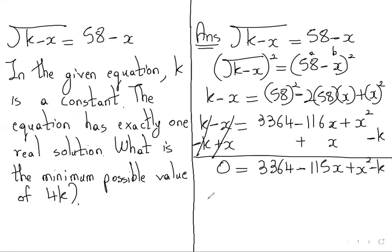So now we can write in proper order: first x square, then minus 115x, then plus 3364 minus k. Since k is a constant, it is just a number. So this 3364 minus k we will consider both together as a number, equal to zero.